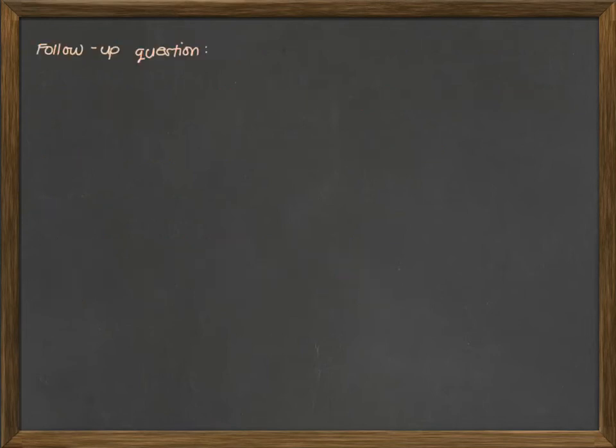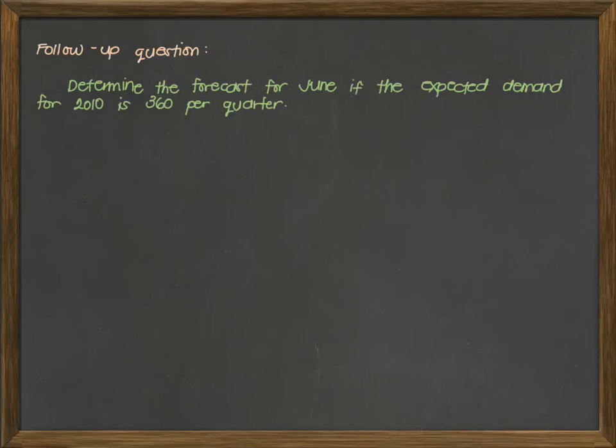Now, let's have a follow-up question. What if we want to determine the forecast for June if the expected demand for 2010 is 360 per quarter? Take note from our previous example, we were given 1,200 units expected demand annually, every year, 1,200. Now, in this case, we were given expected quarterly demand of 360 units. Again, since in quarters yung binigay na expected demand, this should be converted first into monthly demand kasi or since our given seasons is in months.